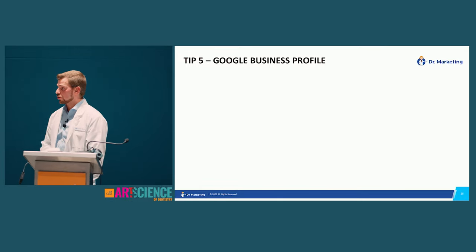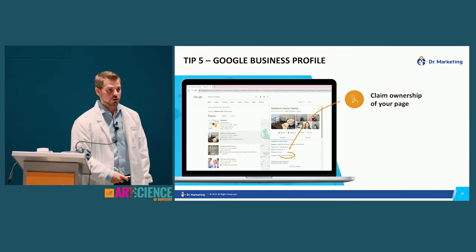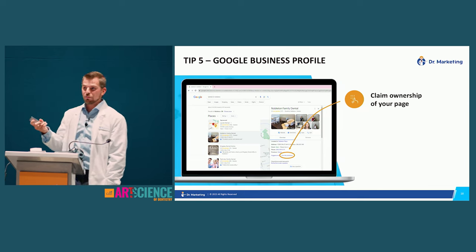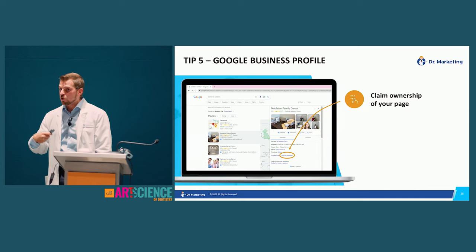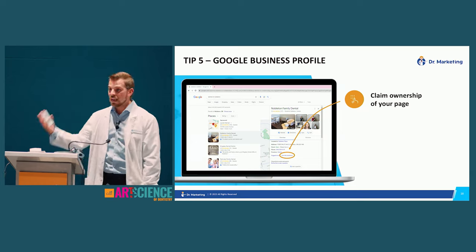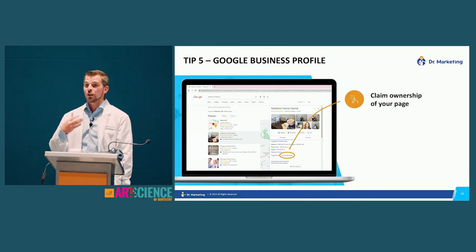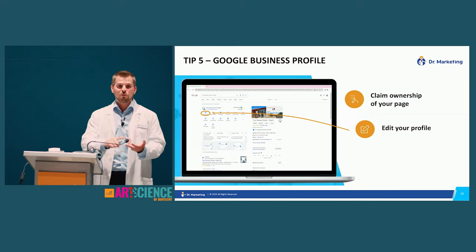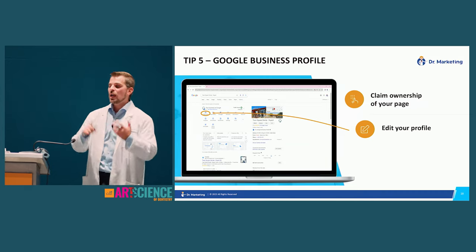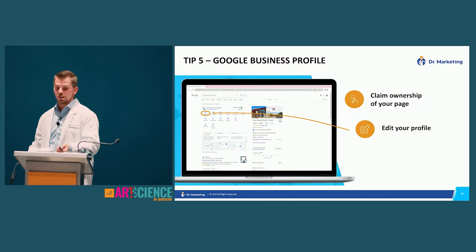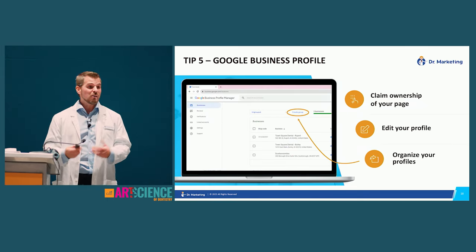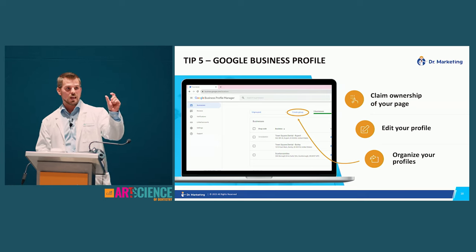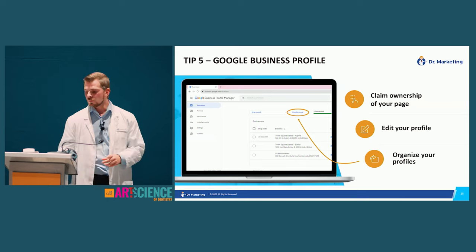Next is Google Business Profile — formerly Google My Business. This is the maps section of Google. First, claim ownership of your page so you can respond to reviews and make announcements. Then update your profile: practice name, phone, fax, email, appointment schedule, hours, website link, services, description, and even the year your office opened. If you have multiple locations, you can organize profiles into groups by region.